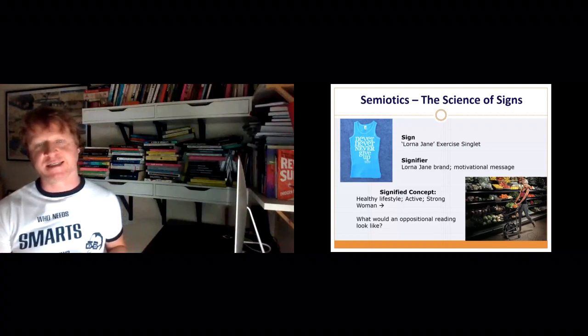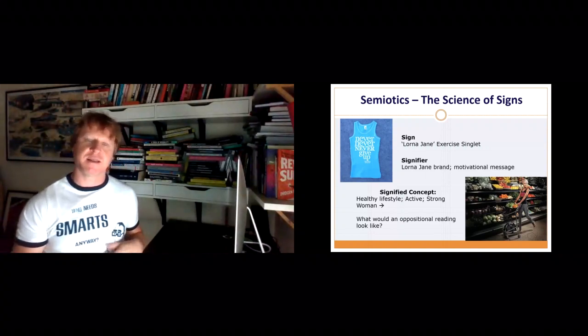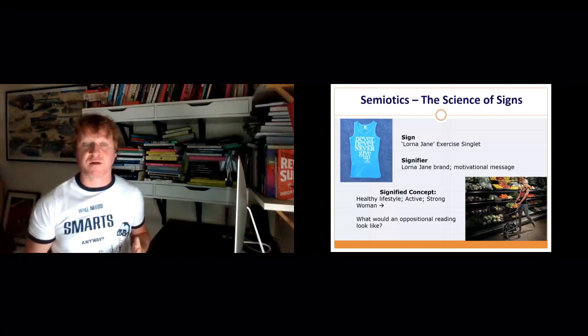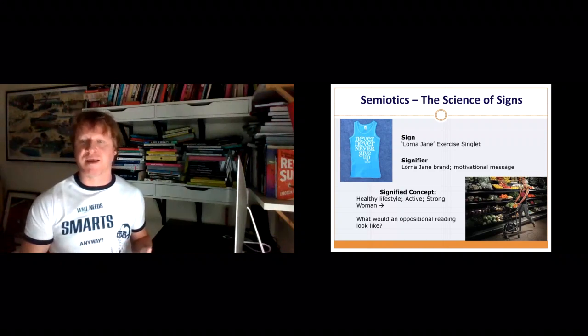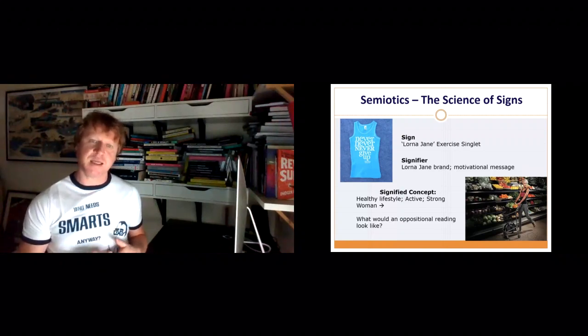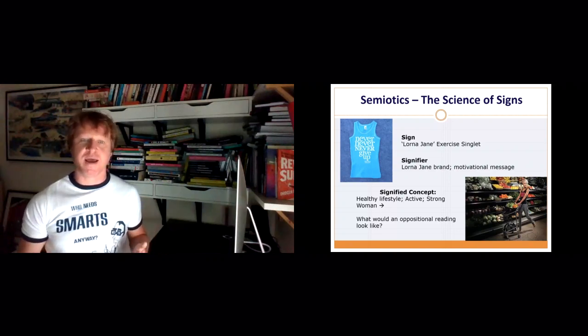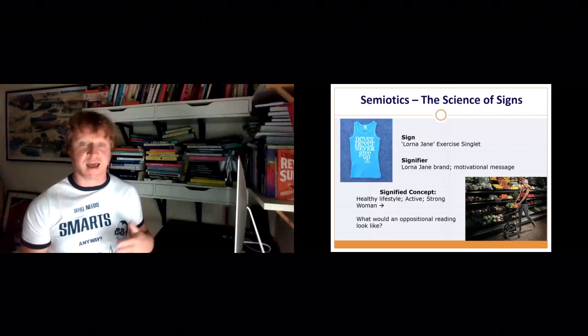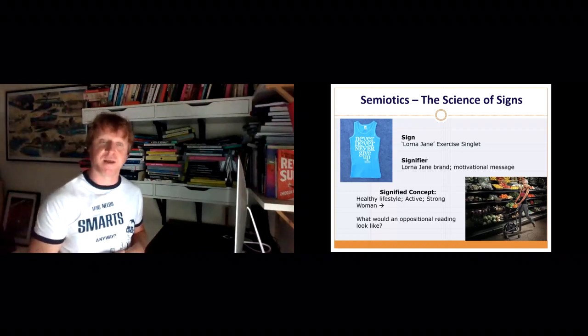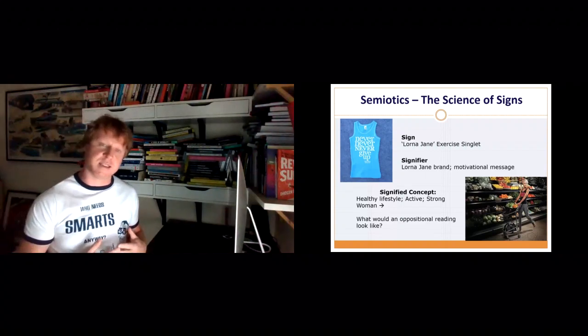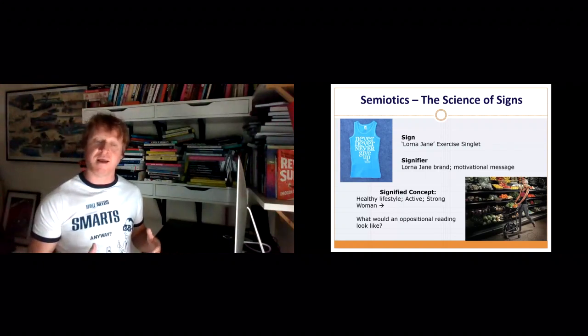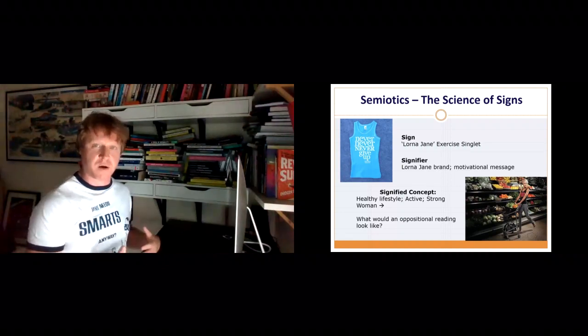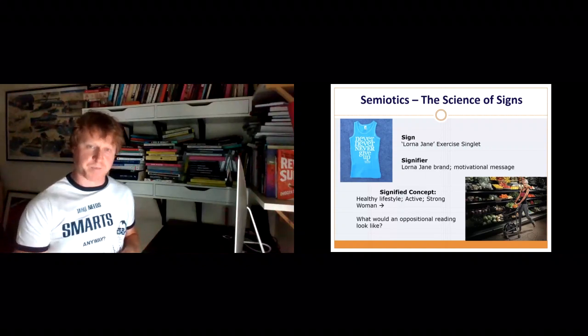So let's do a quick semiotic reading of, say, Lorna Jane's exercise singlet. The sign, there's the singlet itself. The signifier, Lorna Jane brand, has a motivational message. And the signified concept, a healthy lifestyle of being active and strong. And particularly, this is marketed towards women, and the image used in that marketing tends to be women. So you can see Lorna Jane here is trying to sell what's essentially something to wear by creating an attachment or an association with a particular lifestyle, with a particular way of life, particular ethics and morals, particularly around health and exercise. But what would an oppositional reading look like of that? So one of the things that semiotics, and what I'm about to talk about in a minute in terms of encoding and decoding, allows us not just to necessarily take on the ideological messages that are embedded in these signs, but allows us to have some kinds of oppositional or negotiated readings of these things as well.